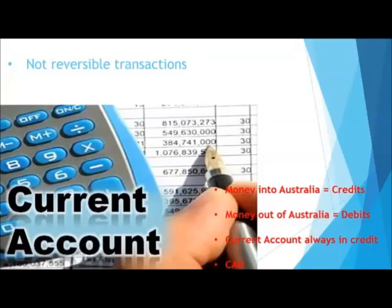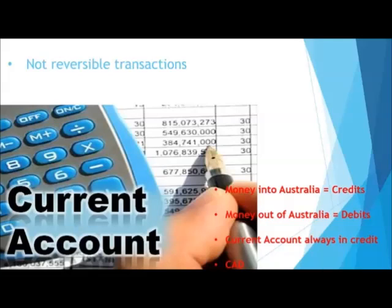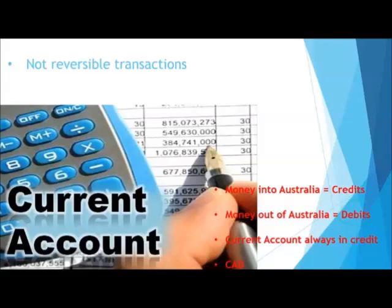The first thing to realise with the current account is that it looks at transactions which are not reversible. For example, if I pay interest, that's a one-way thing. If I receive dividends, that's a one-way thing. Money that comes into Australia we call credits — they're the good things — and money going out of Australia we call debits. The current account has always been in deficit, at least for the last 30 years, and that's also called CAD — Current Account Deficit.